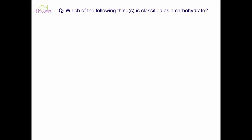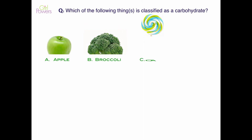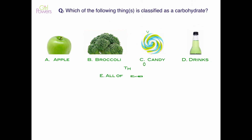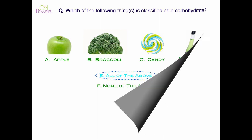So here's a question: which of the following is classified as a carbohydrate — an apple, broccoli, candy, or a soft drink? All of the above or none of the above? The answer is all of the above. When you look at these four incredibly different food items, it's amazing to consider that they're all classified as carbohydrates. That is why carbohydrates is such a confusing category, but hopefully it's a little bit clearer now.